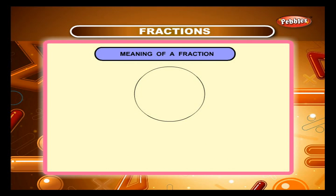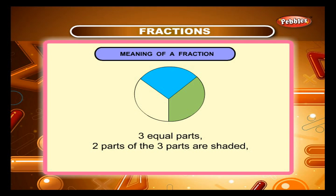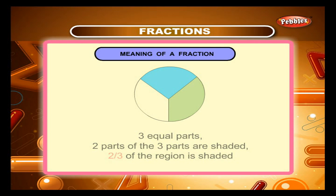In figure 2, which is a circle, there are three equal parts. Here, two parts of the three parts are shaded. In other words, two-thirds of the region is shaded.